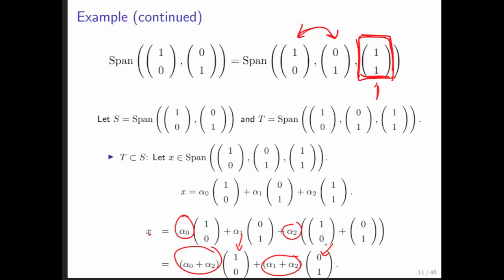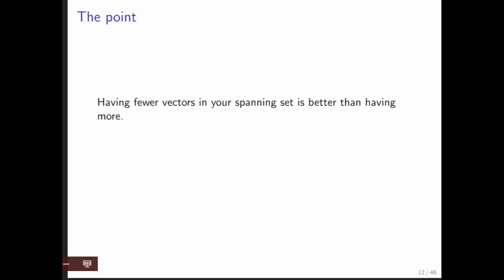What's really going on here is that we did not need the third vector, because that vector itself can be written as a combination of the other two. This vector is a linear combination of those two vectors. Anytime you have a vector in the set that is a linear combination of other vectors, you don't need that vector. So having fewer vectors is better than having more.